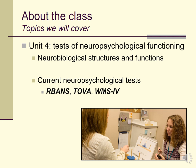Unit 4 covers tests of neuropsychological functioning — tests traditionally used to measure psychological functioning closely related to well-understood brain areas. To discuss these, I'll introduce relevant brain structures and their functions, as well as major neuropsychological tests: the Halstead-Reitan, the TOVA, and the Wechsler Memory Scale. You'll get chances to practice with each of them to develop a good sense of what a neuropsychological assessment involves.